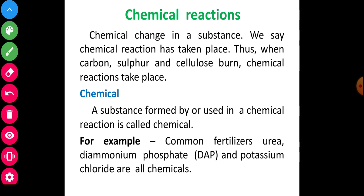Second point: about chemical reactions. Chemical change in a substance. We say a chemical reaction has taken place when carbon, sulfur, or cellulose burns. Chemical substances formed by or used in a chemical reaction are called chemicals. Examples: common fertilizers like urea, diammonium phosphate (DAP), superphosphate of lime, ammonium nitrate, and potassium are all chemicals.